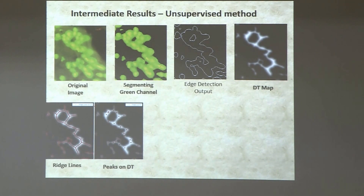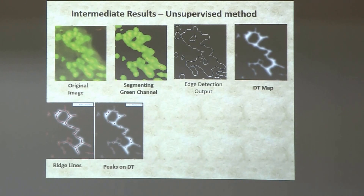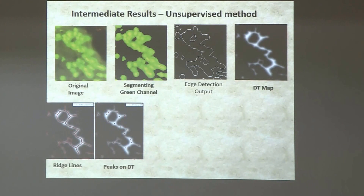We actually adapted this ridge-line code from a paper originally designed for detecting blood vessels in scans. From the ridge map, we look at certain junctions called bifurcations — a term from my earlier fingerprint recognition work in biometrics. Peaks corresponding to bifurcations give us an initial set of cell locations, which we call peaks on the distance transform.